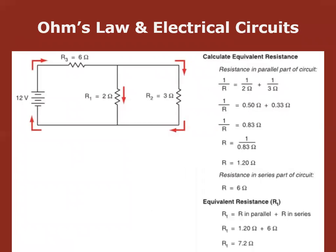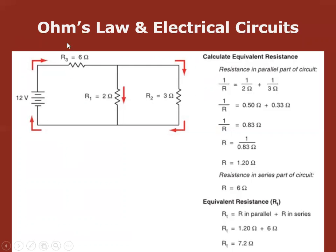For a combination series-parallel circuit, don't panic — just break it down. Ignore the series resistor for now and pretend it's not there. That turns the parallel section into the same problem we just solved. Those parallel resistors work out to 1.2 ohms. Now treat that as one resistor in series: 6 + 1.2 = 7.2 ohms total resistance for the entire circuit.